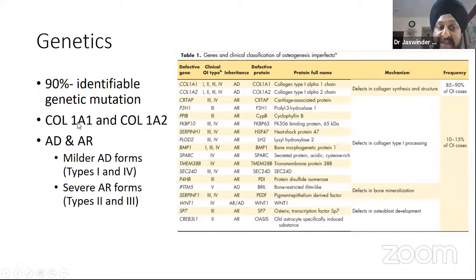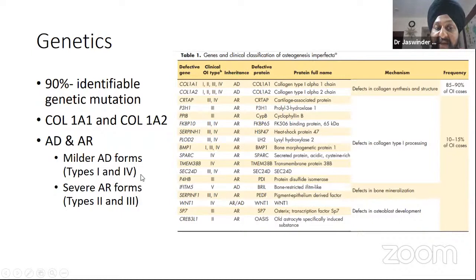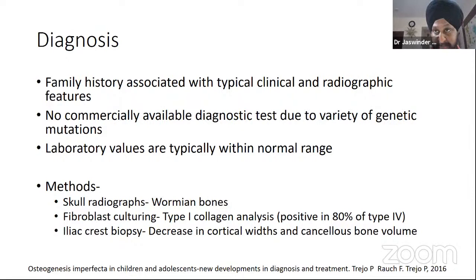90% of the genetic mutations are identifiable and occur in COL1A1 and COL1A2 genes. The disease is either autosomal dominant or autosomal recessive. The milder types — type 1 and type 4 — are autosomal dominant. The severe types — type 2 and type 3 — are autosomal recessive. More recently, X-linked subtypes have also been classified, and the present literature lists innumerable additional pathogenic genes.